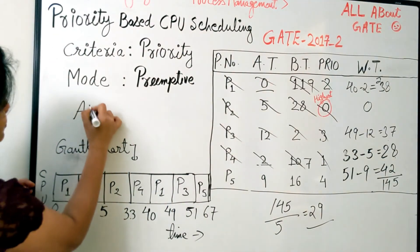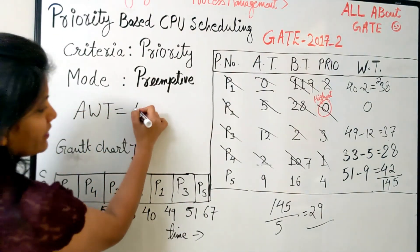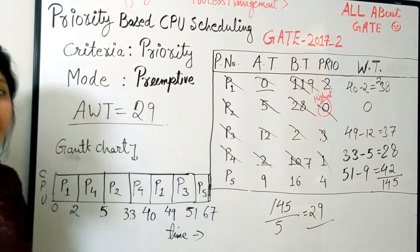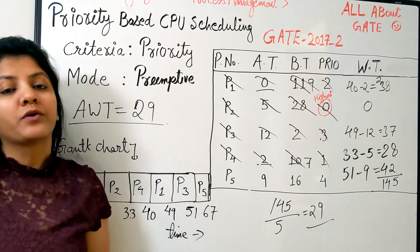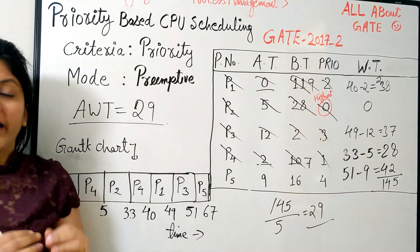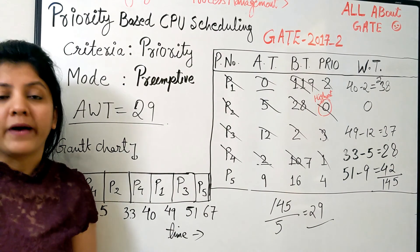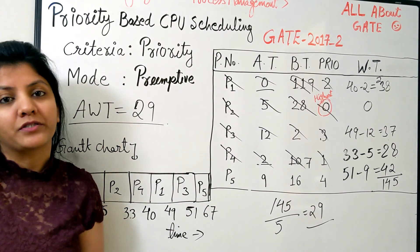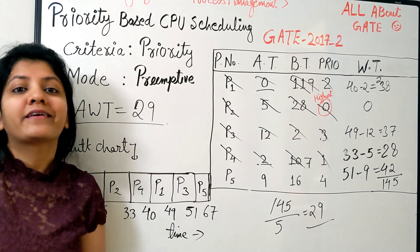So this was the preemptive priority scheduling algorithm. We solved the GATE question to understand it. I'll come in the next video with more questions from the same algorithm and from previous year GATE questions. You stay tuned. Till then, take care and bye.